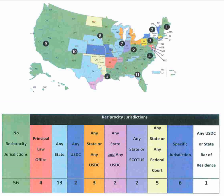The United States District Courts are the general trial courts of the United States federal court system. Both civil and criminal cases are filed in the District Court, which is a court of law, equity, and admiralty. There is a United States Bankruptcy Court associated with each United States District Court. Each federal judicial district has at least one courthouse, and many districts have more than one. The formal name of a district court is the United States District Court for the name of the district—for example, the United States District Court for the Eastern District of Missouri.